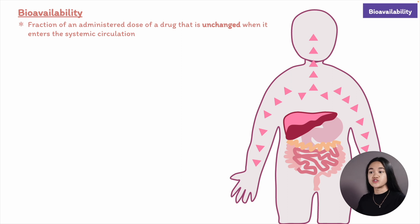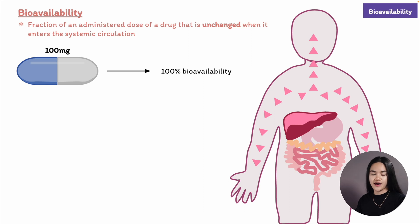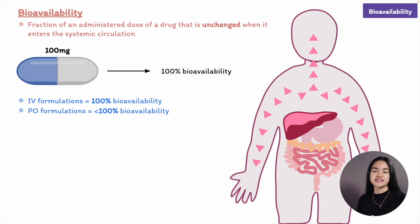For example, if we ingested 100 mg of a drug and 100 mg was absorbed into the circulation unchanged, it would have a bioavailability of 100%. If only 70 mg were absorbed unchanged, the bioavailability would be 70%. Intravenous drug administration always has 100% bioavailability because it goes directly into the bloodstream, whereas oral medications have less.